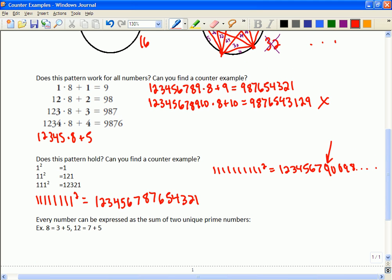Okay, last one. Is it possible that every number can be expressed as two unique prime numbers? Here's a list of prime numbers that you can play around with. Let's say numbers larger than two.